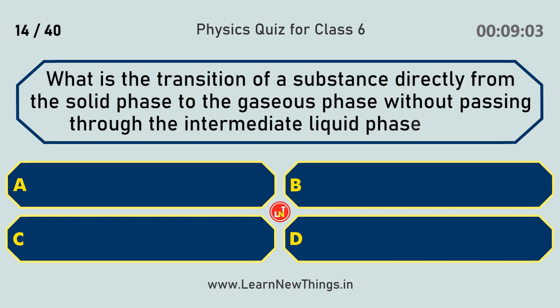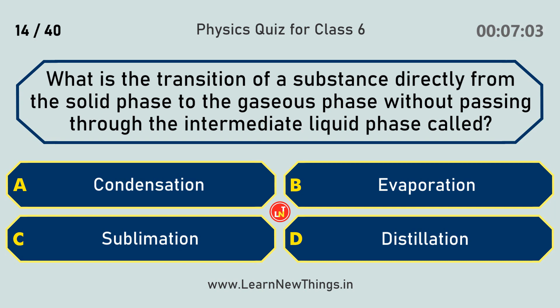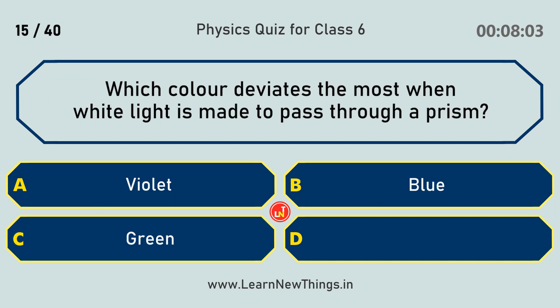What is the transition of a substance directly from the solid phase to the gaseous phase without passing through the intermediate liquid phase called? Sublimation. Which color deviates the most when white light is made to pass through a prism? Violet.